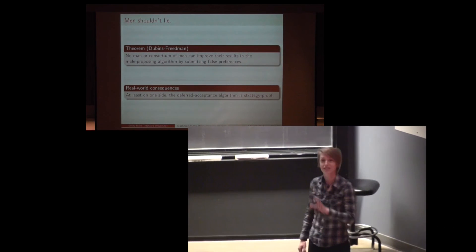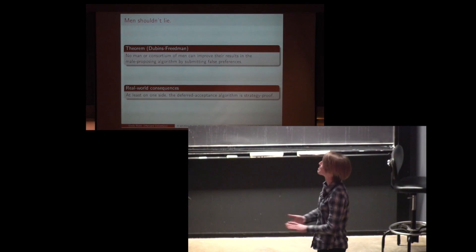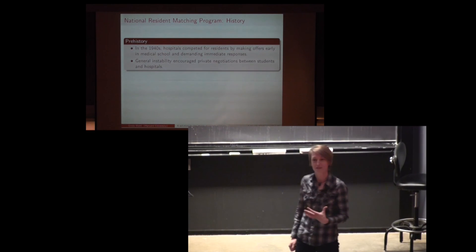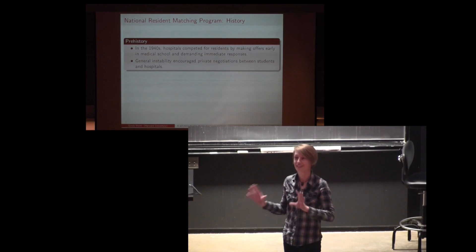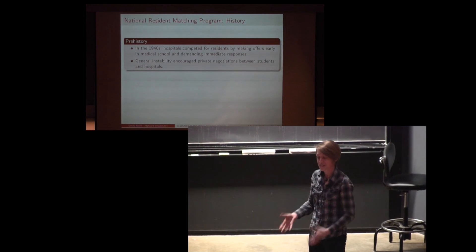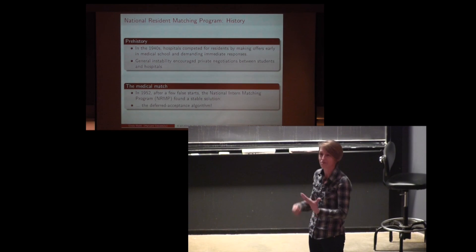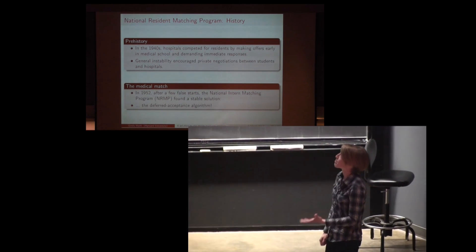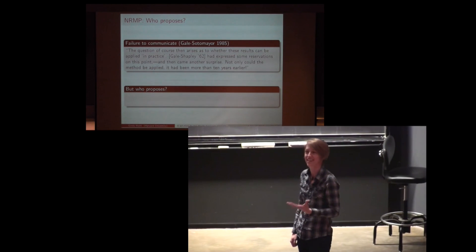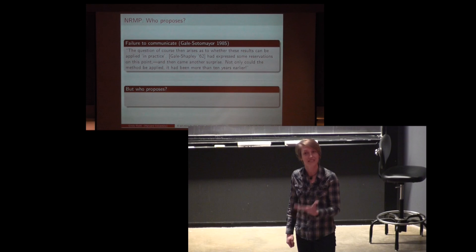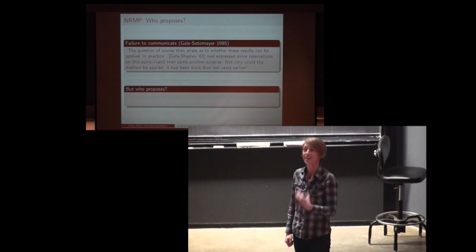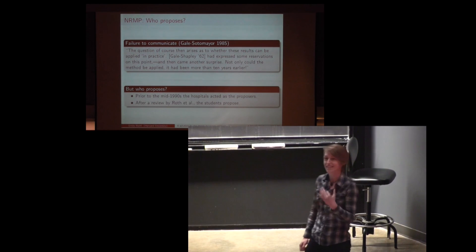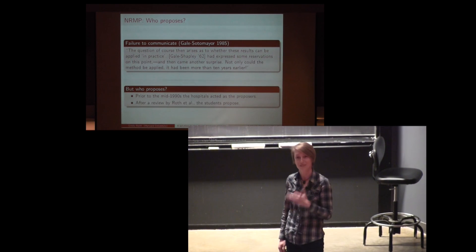I'd like to end by discussing some famous real-world applications. The most famous is the National Residency Matching Program. In the 1940s, the procedure by which graduating medical students were paired with hospital residency programs was rife with instability and chaos. Eventually this hit a crisis point, and in 1952 a group of doctors, after some trial and error, hit on a solution — exactly the Gale-Shapley algorithm, though Gale and Shapley had no idea about this. An interesting question is who proposes in the medical match. Until the 1990s the hospital-optimal algorithm was used, but now the students act as the proposers.